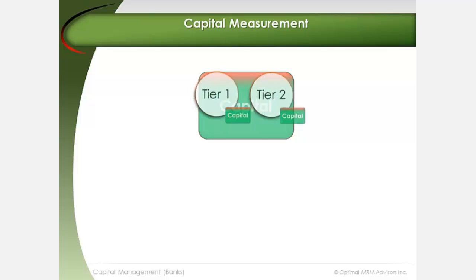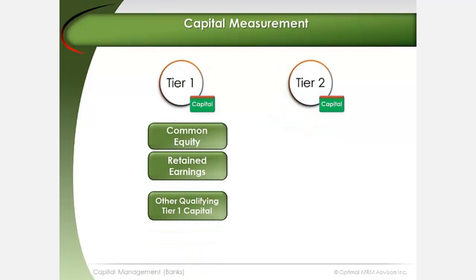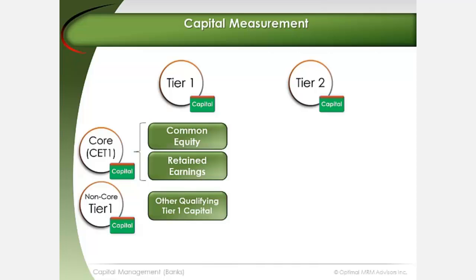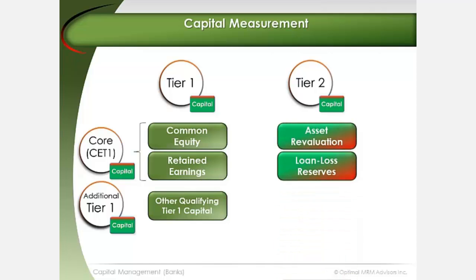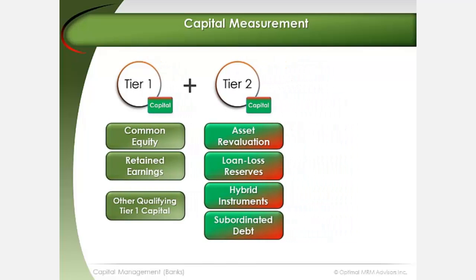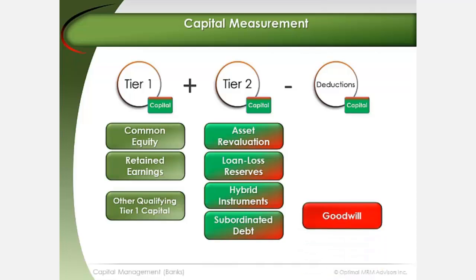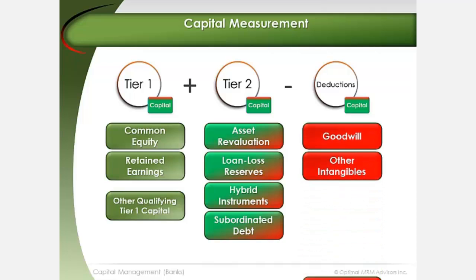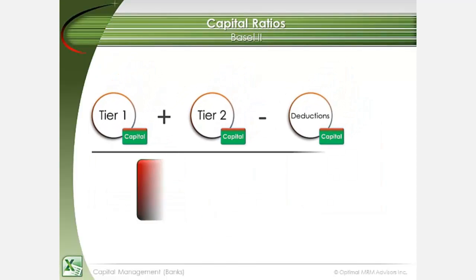Regulatory capital is composed of two tiers of capital. Common equity and retained earnings are referred to as core capital, or common equity tier 1, or CET1. Other tier 1 capital is referred to as non-core T1 capital or additional tier 1 capital. Tier 2 capital is referred to as supplementary capital. The sum of tier 1 and tier 2 capital is referred to as the bank's total capital base. Capital ratios are calculated by subtracting items such as goodwill, other intangible assets, and deferred assets, and dividing by the sum of risk-weighted assets.